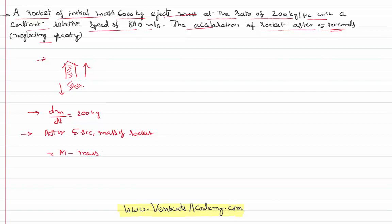Mass lost in 5 seconds: the total mass given in the problem is 6000 kilograms. Per second it loses a mass of 200 kilograms, and it's happening for 5 seconds. So 6000 minus 1000 gives a mass at that instant of 5000 kilograms.